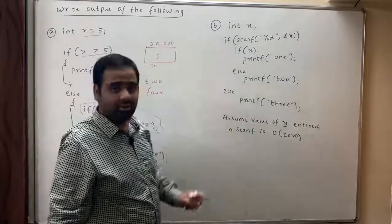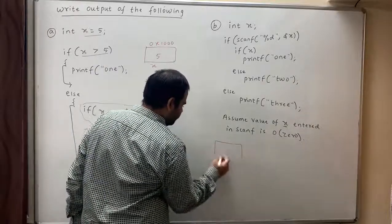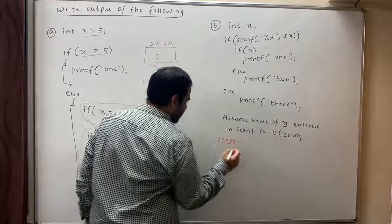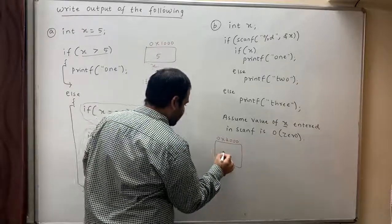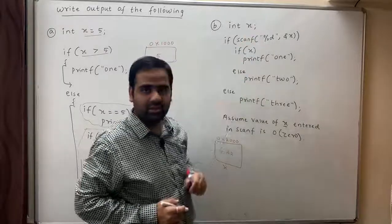Let's see the output of question B. There is a variable x. Let the address of this be say 0x2000. What is the initial value of x? The initial value of x is garbage because we did not initialize anything.